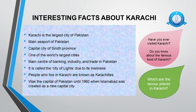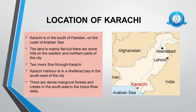Have you ever visited Karachi? Do you know about the famous food of Karachi? Who can tell me which are the famous places in Karachi? You can Google these questions and discuss in the Zoom class. Karachi is in the south of Pakistan on the coast of the Arabian Sea. The land is mainly flat but there are some hills on the western and northern parts of the city. Two rivers flow through Karachi — the river Malir and the river Layari. Karachi harbor is in a sheltered bay in the southwest of the city. There are dense mangrove forests and creeks in the southeast in the Indus river delta.